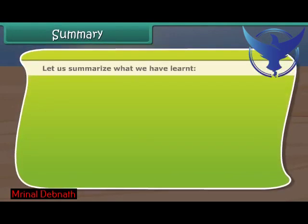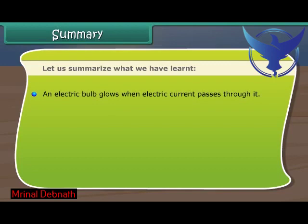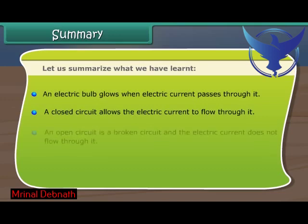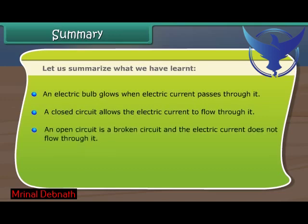Let us summarize what we have learned. An electric bulb glows when electric current passes through it. A closed circuit allows the electric current to flow through it. An open circuit is a broken circuit and the electric current does not flow through it. A switch is a device to close or open a circuit.